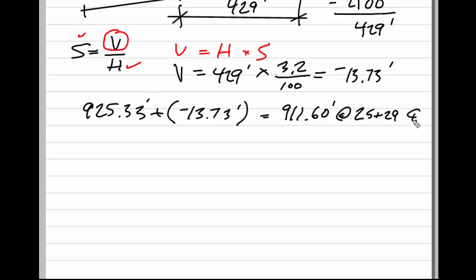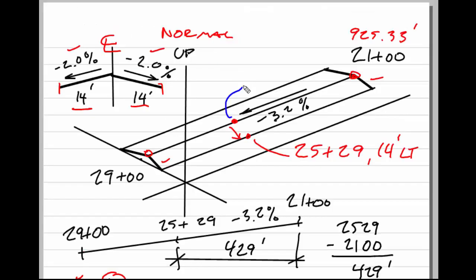Now my goal is to find this at 14 feet left. Here we said this is 911.60 at the center line. When we go out 14 feet we do have some elevation change going down from the center line to that edge of pavement. So let's compute that.